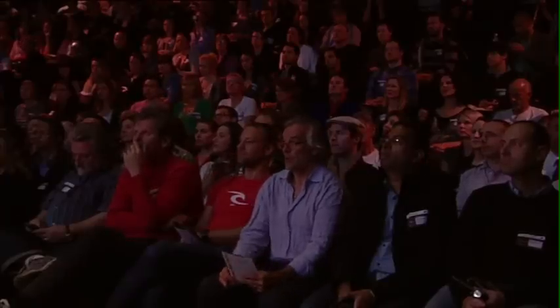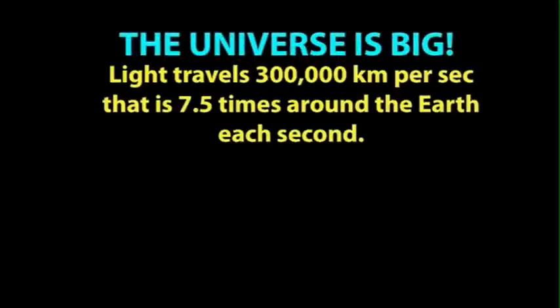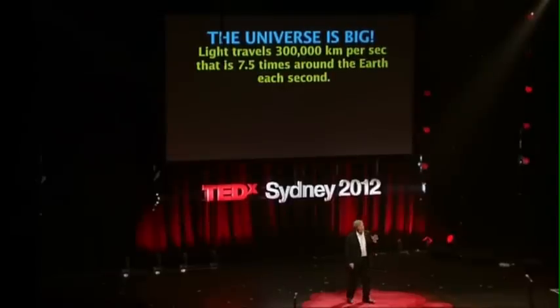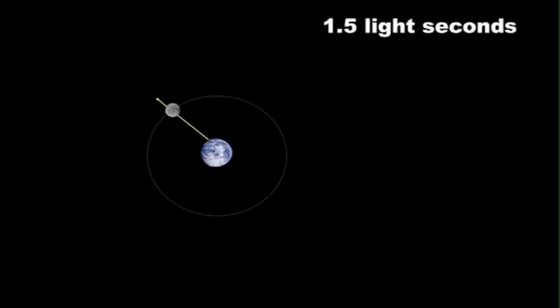The universe is big. Now, let's take a tour of it using the speed of light as our guide. Light travels around the Earth seven and a half times a second, 300,000 kilometers per second. And so that means when Neil Armstrong took his small step, we found out about it one and a half seconds after it occurred.